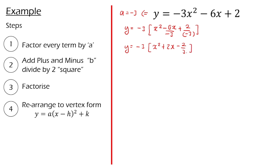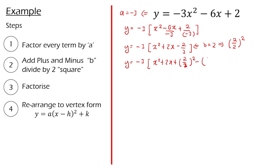Now we move on to the second step: adding ±(b/2)². We identify b = 2 and compute (2/2)² = 1. We add this into our equation, giving y = -3(x² + 2x + (2/2)² - (2/2)² - 2/3). Simplifying, we have y = -3(x² + 2x + 1² - 1² - 2/3).